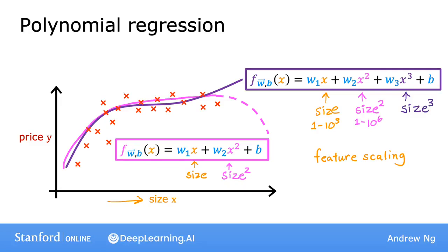And the third feature, which is size cubed, ranges from 1 to a billion. So these two features, x squared and x cubed, take on very different ranges of values compared to the original feature x. And if you're using gradient descent, it's important to apply feature scaling to get your features into comparable ranges of values.